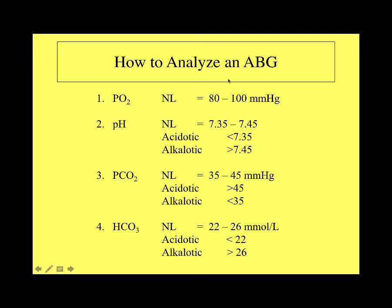I'm going to give you a four-step technique to analyze an arterial blood gas. The supplemental video provides a six-step method, and there are other approaches such as the tic-tac-toe method — find what works best for you. This four-step method examines the oxygen component, the pH component, CO2, and the bicarb component.